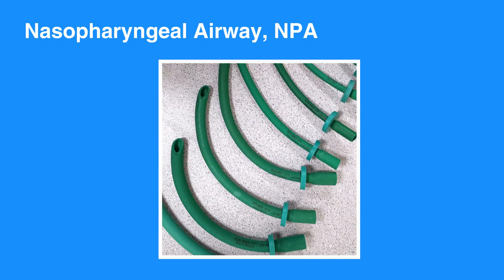The nasopharyngeal airway, or NPA, is a soft rubber or plastic uncuffed tube that provides a conduit for airflow between the nares and the pharynx. The NPA is used as an alternative to an OPA in individuals who need a basic airway adjunct. Unlike the oral airway, NPAs may be used in conscious or semi-conscious individuals with intact cough and gag reflex.